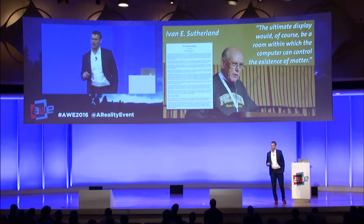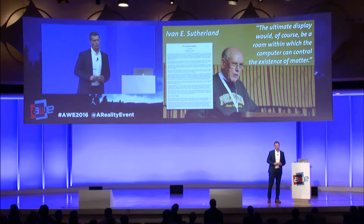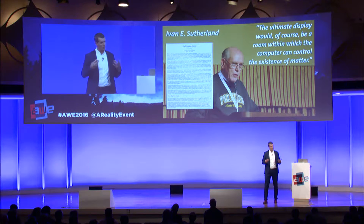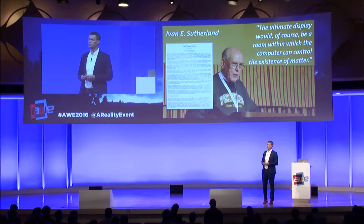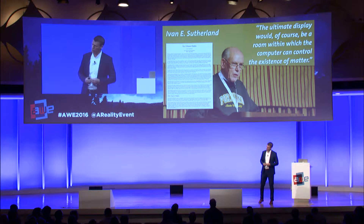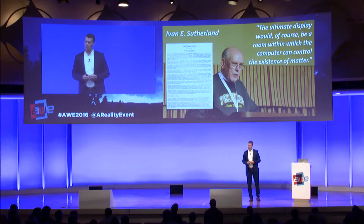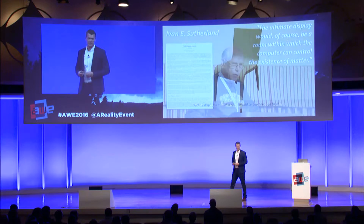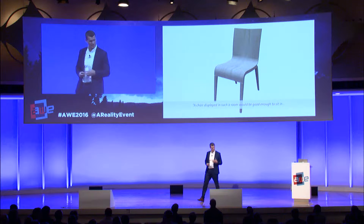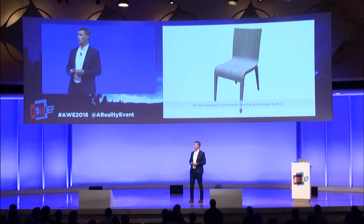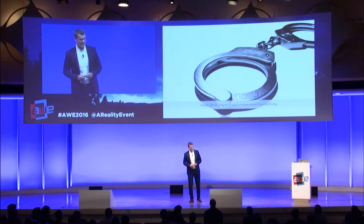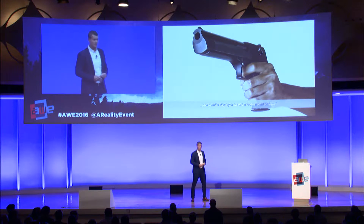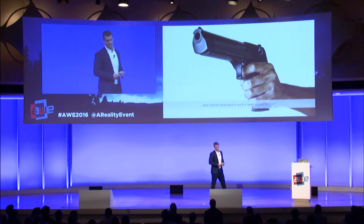In 1965, Ivan Sutherland wrote a wonderful essay called 'The Ultimate Display,' in which he speculated what an ideal, optimal computer display would look like. He concluded that the ultimate display would be a room within which the computer can control the existence of matter. For example, a chair displayed in such a room would be good enough to sit in, handcuffs displayed would be confining, and a bullet displayed would be fatal.